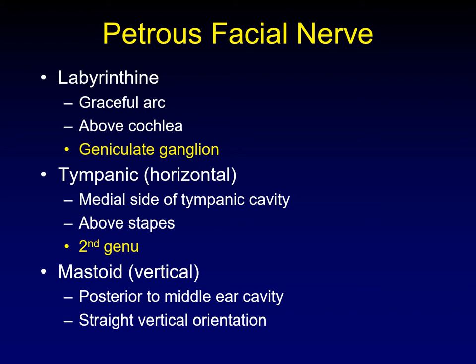The tympanic segment runs along the medial side of the tympanic cavity — where it gets its name — running about one to two millimeters above the level of the stapes. There it reaches the second genu, where it makes a right turn and heads straight vertically down as the mastoid segment, which runs posterior to the middle ear cavity with a perfectly straight vertical orientation. You can frequently see the entire mastoid segment in a single coronal image. The bony canal through which the petrous facial nerve runs is called the fallopian canal, or the facial nerve canal.